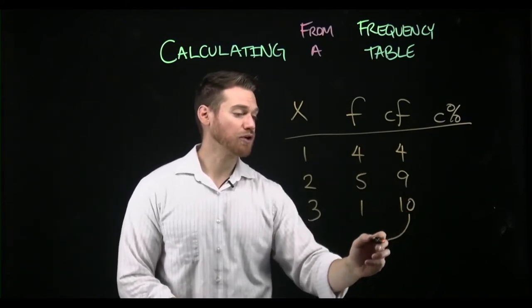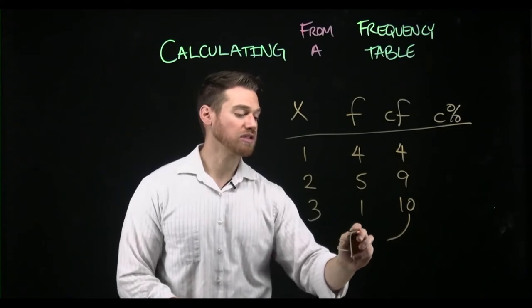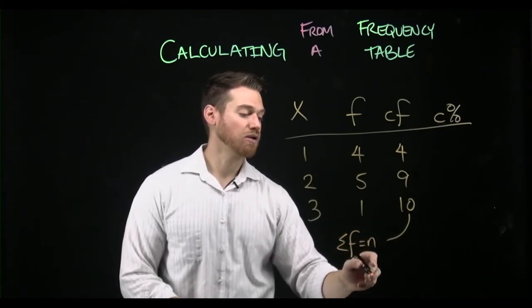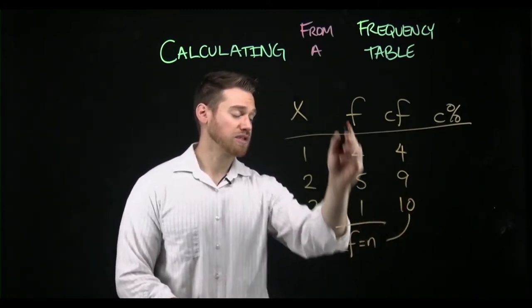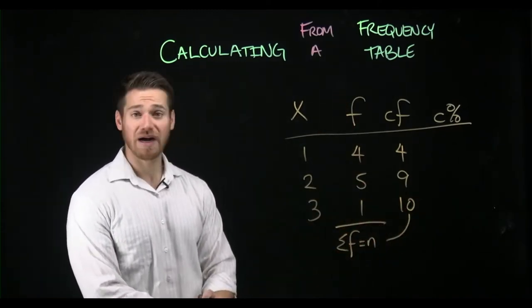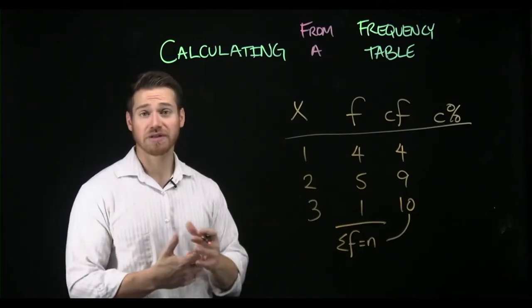So you'll notice the last of your cumulative will also equal the sum of F, or your sample size, which we saw earlier was 10. So that value will also equal the sum of all the Fs, because you've gotten to the entire set of values.